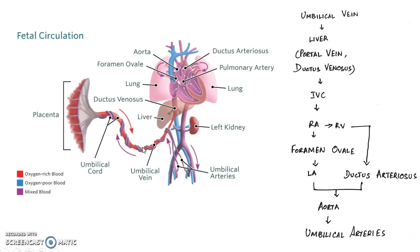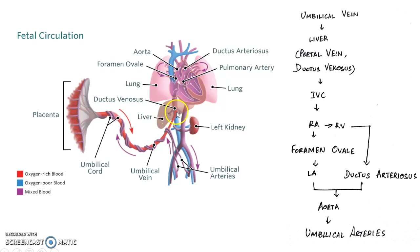Blood in the umbilical vein then goes to the liver. Remember a fetal liver is not yet fully developed, so it doesn't require much blood supply. So the blood here is bypassed through a structure called ductus venosus and it enters the inferior vena cava. That is, much of the blood doesn't enter the liver and it directly drains into the inferior vena cava through the ductus venosus.